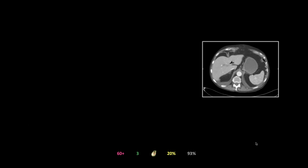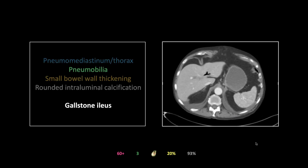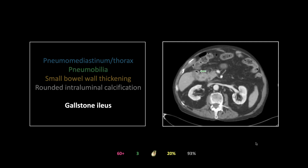There is pneumobilia — centrally located, branching, pretty typical appearance — and a decompressed gallbladder with a little gas within it, right up against the duodenum. I used to look for a big distended gallbladder full of gas, but I stopped when I realized that was foolish: when this happens, a fistula forms between the gallbladder and the duodenal lumen through which the gallstone has passed, so by necessity the gallbladder will be decompressed. You have to look closely — it's easy to confuse that gas with a redundancy of the duodenum.